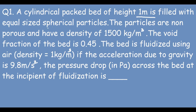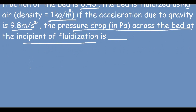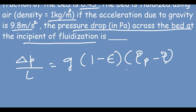Problem 1: A cylindrical packed bed of height 1 meter is filled with equal-sized spherical particles — good, so sphericity φ = 1. The particles are non-porous with density ρp = 1500 kg/m³. The void fraction (bed porosity) ε = 0.45. The bed is fluidized using air with density ρ = 1 kg/m³ and g = 9.8 m/s². Find the pressure drop at the incipient of fluidization. We use: ΔP/L = g(1 − ε)(ρp − ρ).